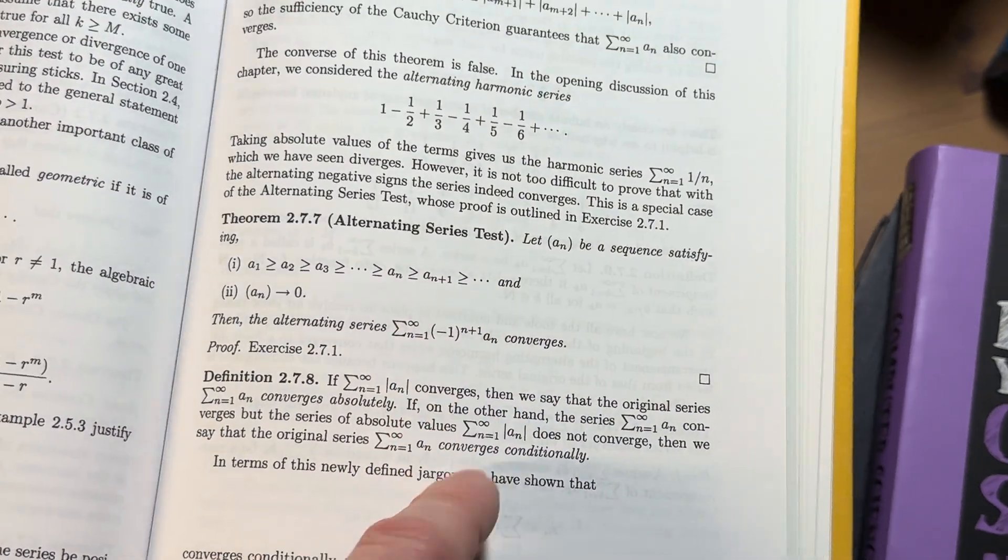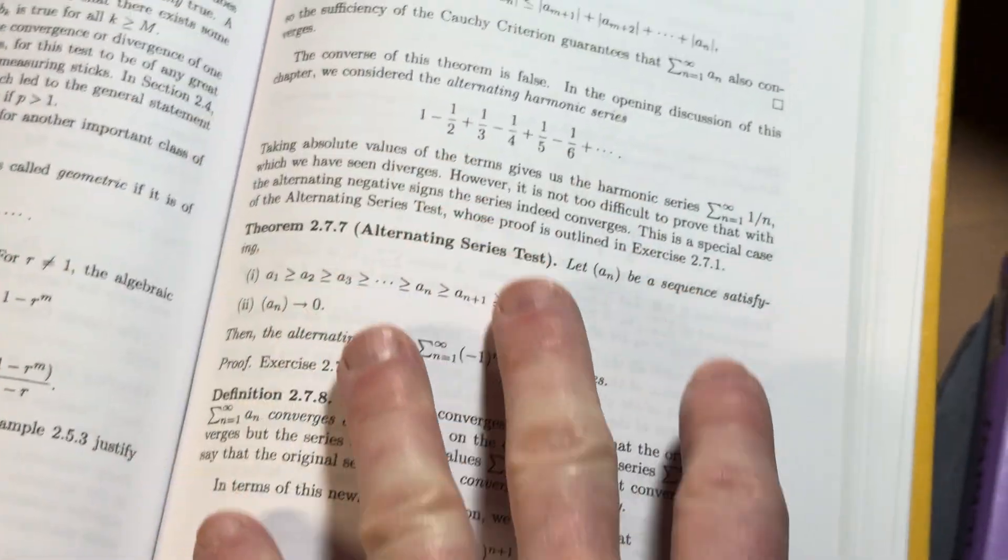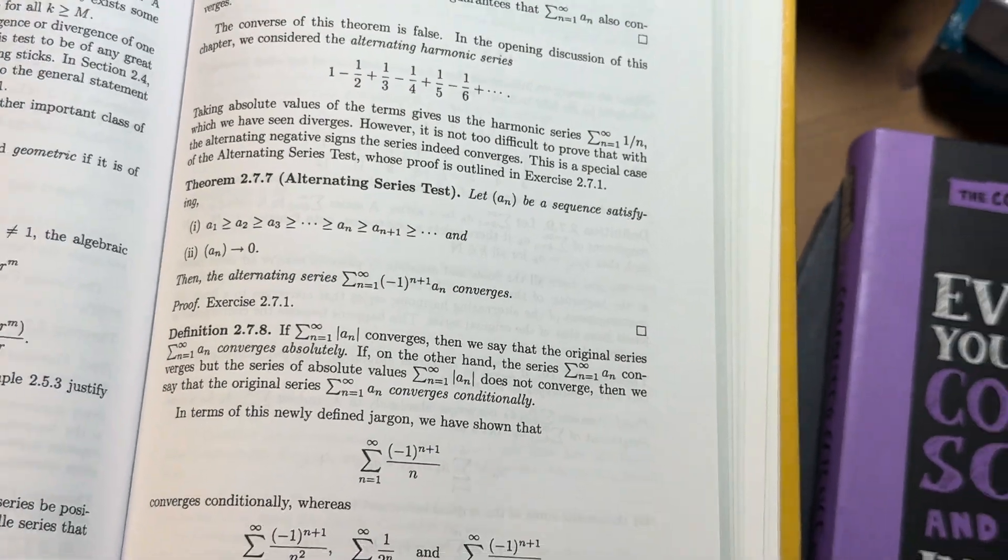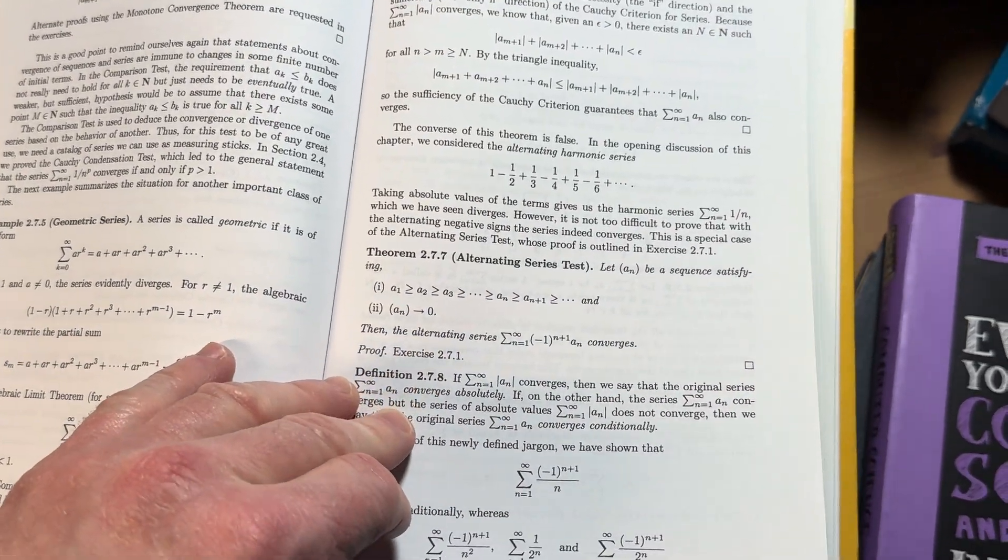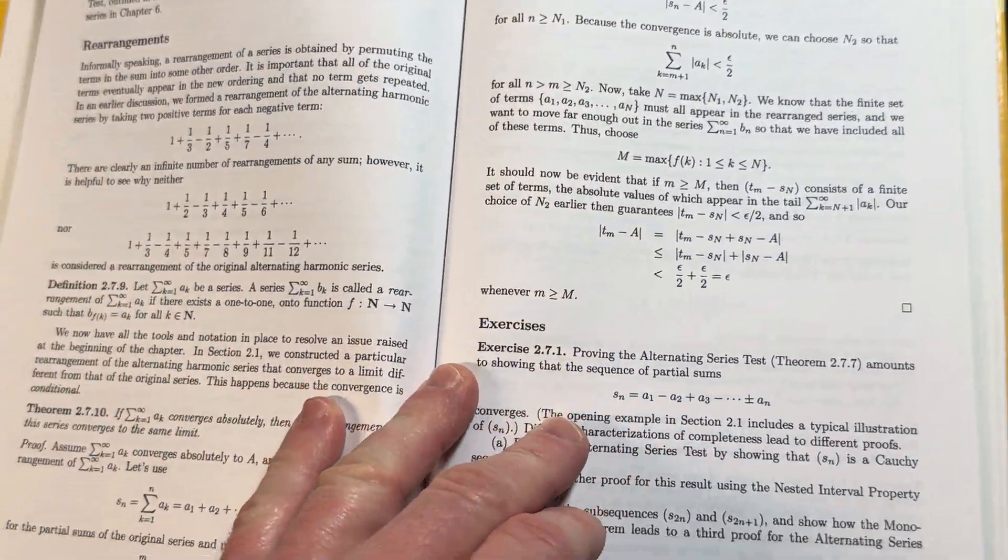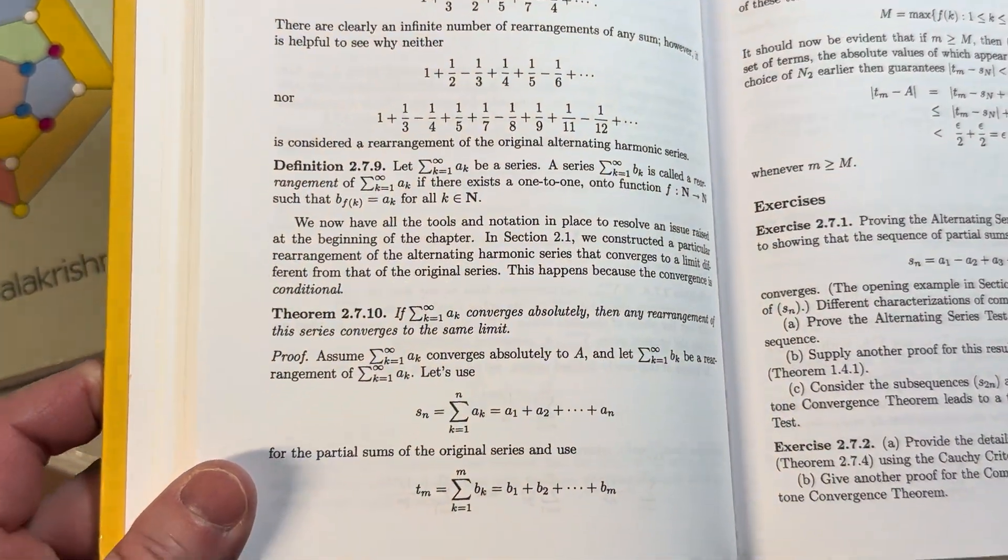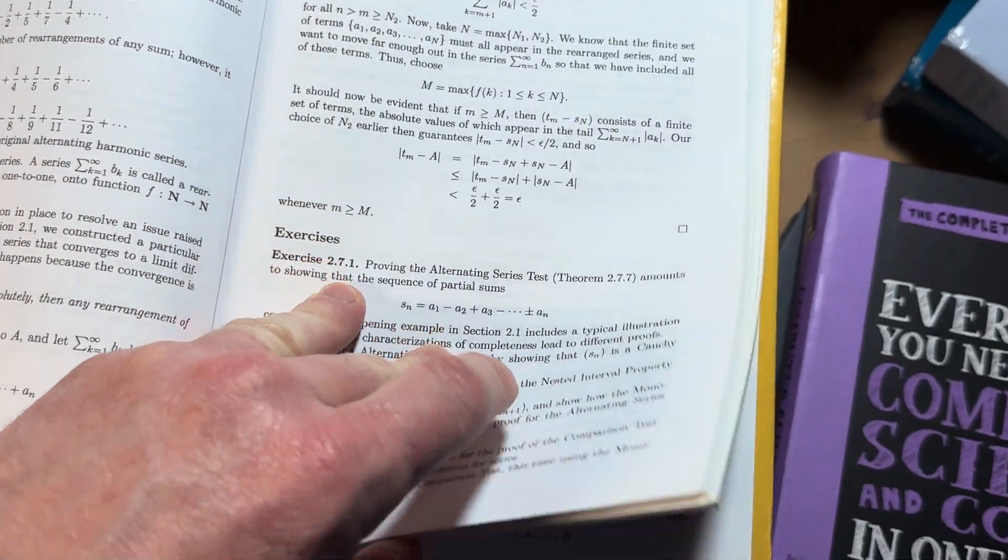A comment about the alternating series test. This is something that Calc 2 students always mess up on. It only talks about convergence, right? It says nothing about divergence. So I've taught a lot of Calc 2 classes, and sometimes people will say divergence about the alternating series test. I'm like, no, the alternating series test does not discuss divergence. Fun times. Yeah, math is tough.